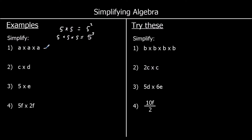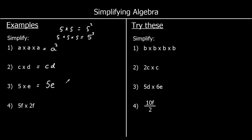So we can say a times a times a is the same as a cubed. For the second one we've got c times d. In algebra we don't write a times sign, so c times d is just written as cd. We don't write the times sign, we just write them next to each other. It's the same thing for 5 times e — we just write 5e, and that means 5 times e.